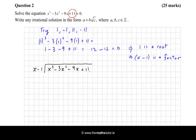And if we look at the wording in the question it says, write any irrational solution in the form a plus b times root c. Probably when we get our quadratic factor we'll have to use the minus b formula.